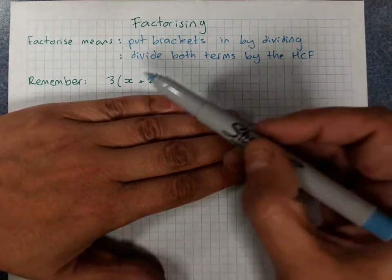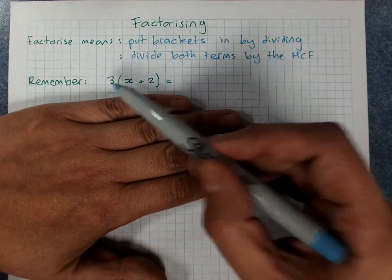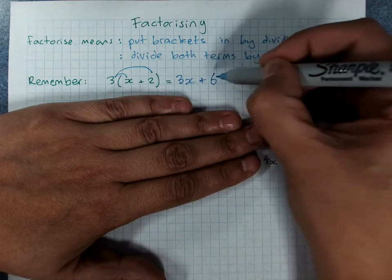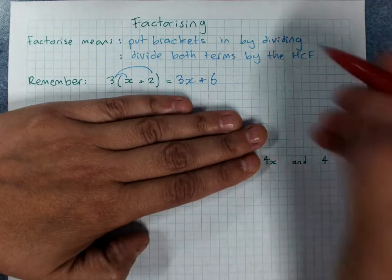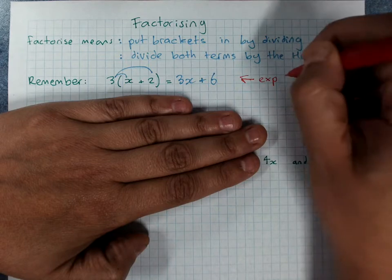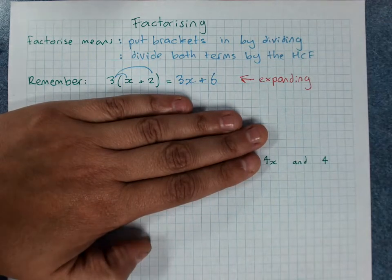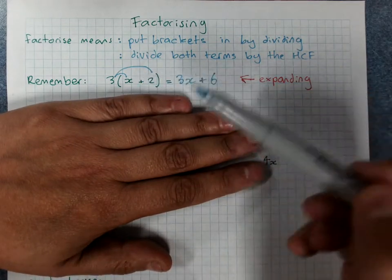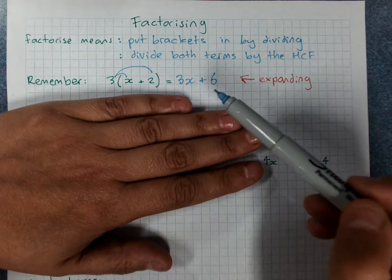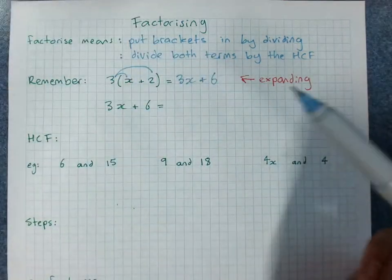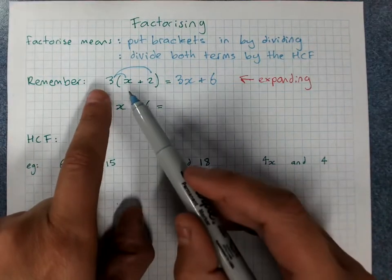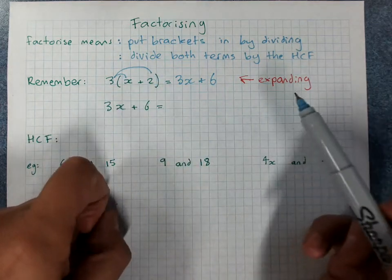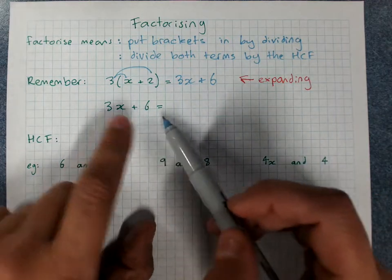Now, just to remember expanding. Expanding means taking the brackets out by multiplying. So 3 times x is 3x. 3 times 2 is 6. And that was positive 6. So I write plus 6. And that is expanding. Take the brackets out by multiplying. Now the opposite of expanding is factorizing. So factorizing must go from this back to that. Because it reverses what the expanding did. If you factorize when you've expanded, you'll just get right back to the same thing. So when I did the expanding, I multiplied twice. I had to multiply by 3 here and here. When I factorize, I'll need to divide by 3 twice in this case.